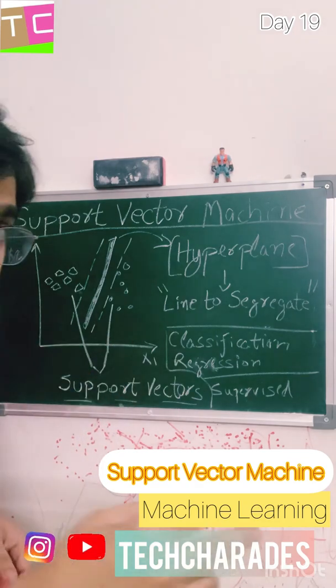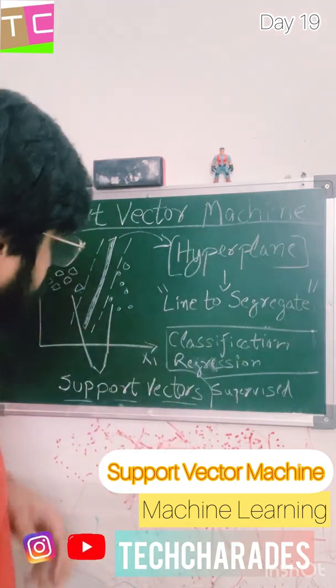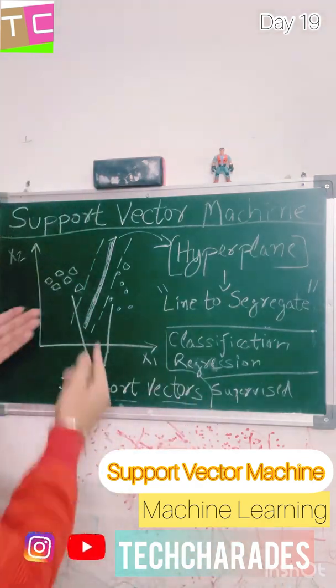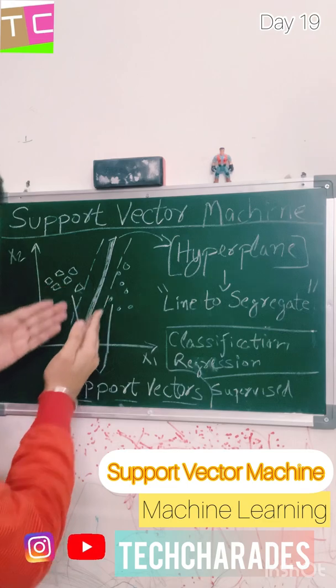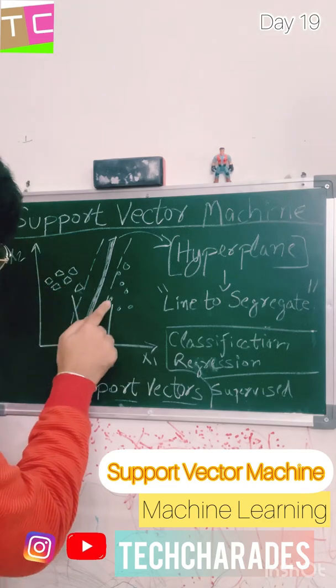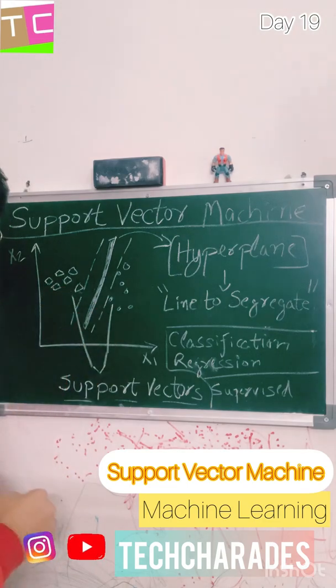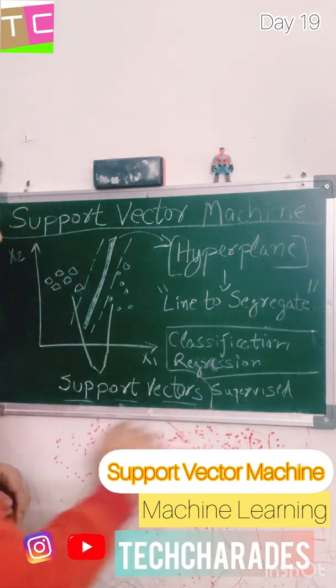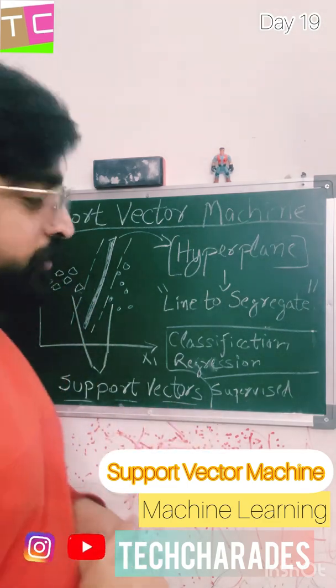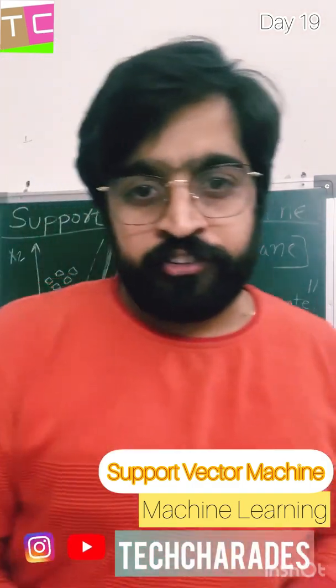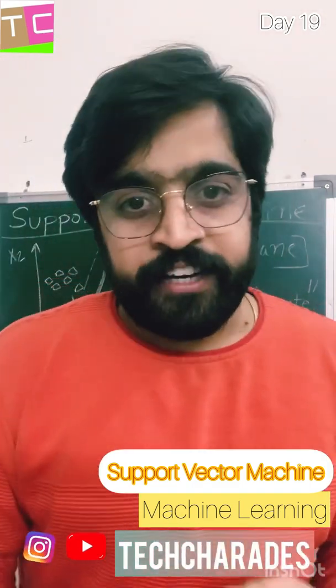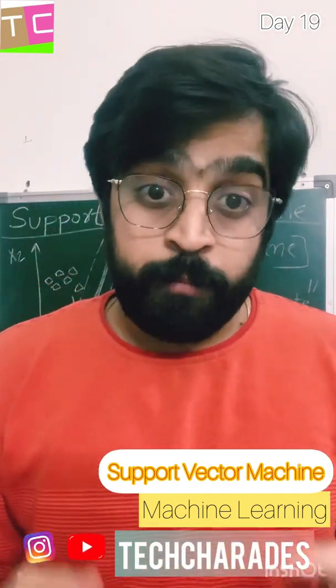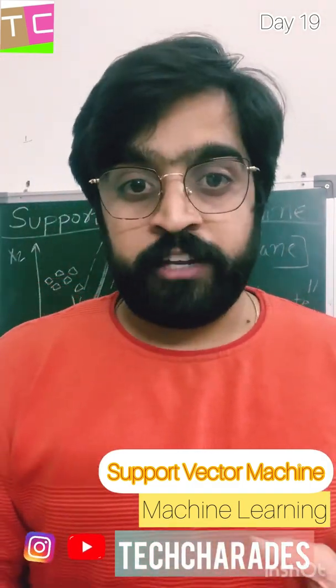The most extreme points — those closest to these dotted lines, like this circle and this box — are called support vectors. An example would be differentiating between a cat and a dog; they both have so many similar features.